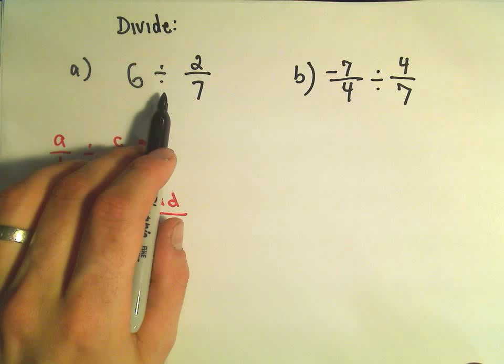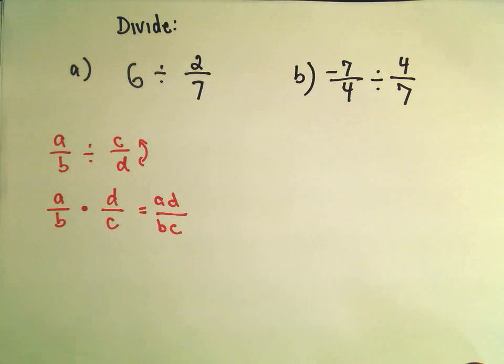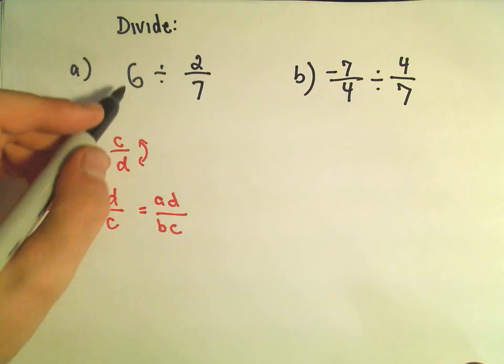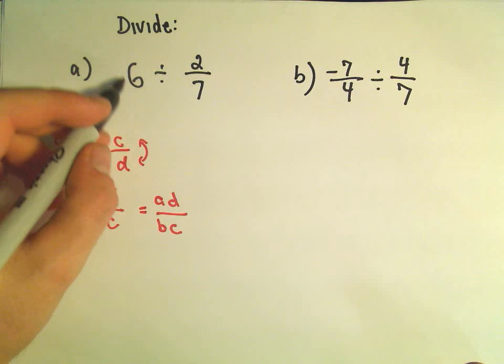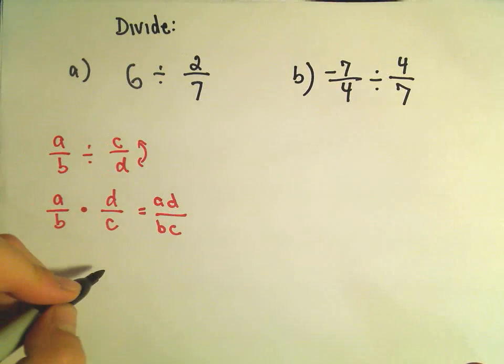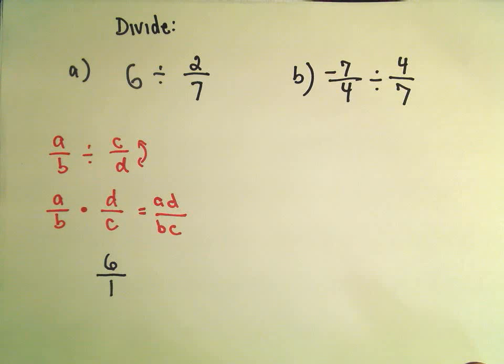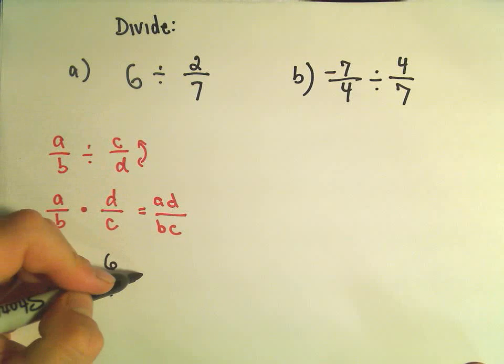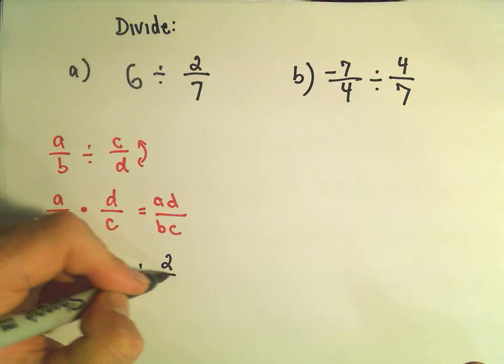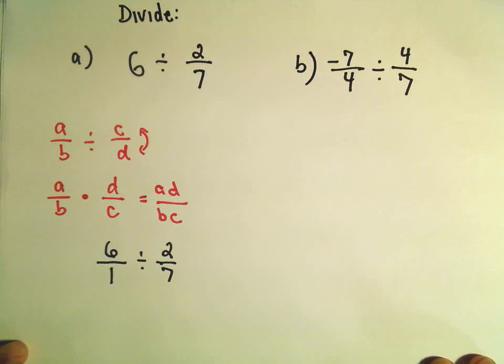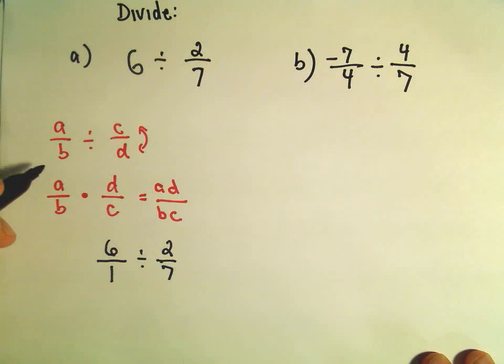Okay, so in the first one we have 6 divided by 2 over 7. The first thing I always do, if I have a number that's not written as a fraction, we can always write any number as a fraction by just dividing it by 1. So 6 divided by 1 is the same thing as 6. Okay, so we were dividing by 2 over 7. And now all I'm going to do is just apply my little rule here.